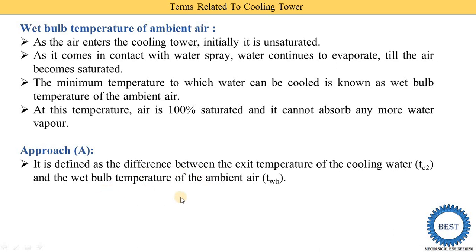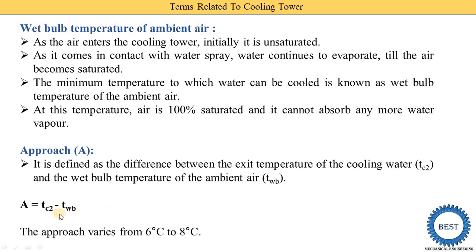The wet bulb temperature of the ambient air is denoted as TWB. The equation for approach A is: A = TC2 − TWB. Here, TC2 is the exit temperature of the cooling water — the water collected at the bottom of the cooling tower. TWB is the wet bulb temperature of the ambient air. This difference is called the approach, and its value ranges from 6 to 8 degrees centigrade.